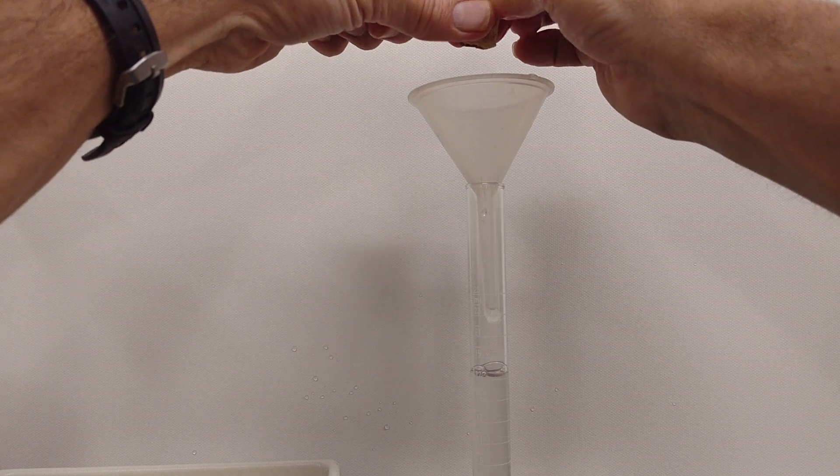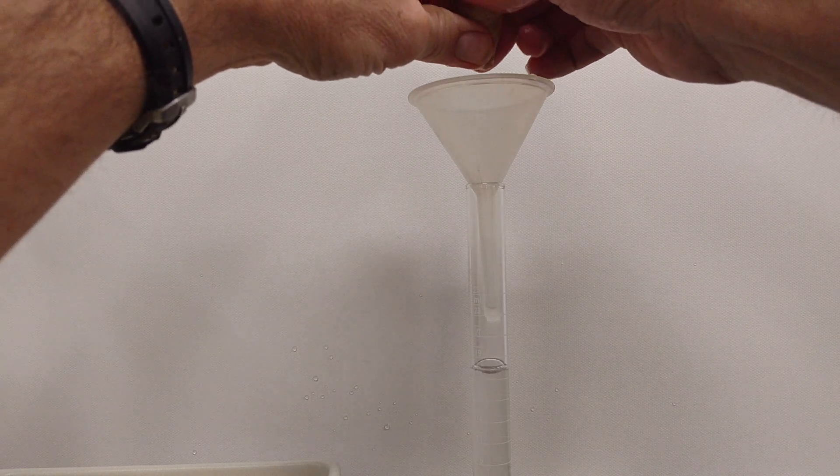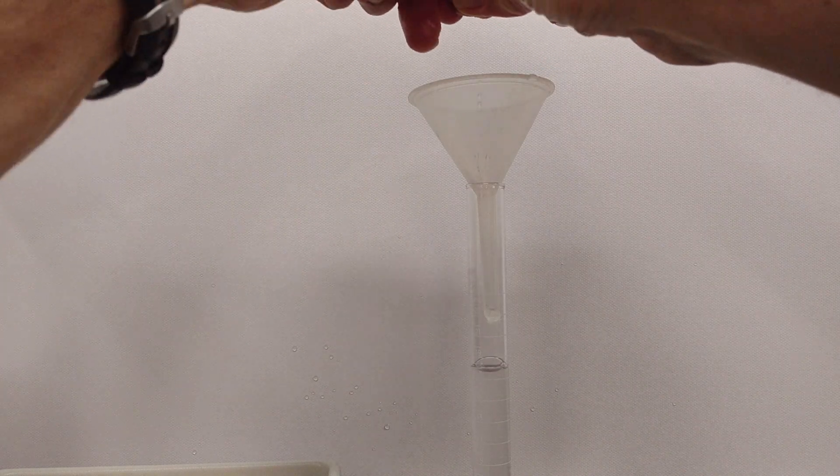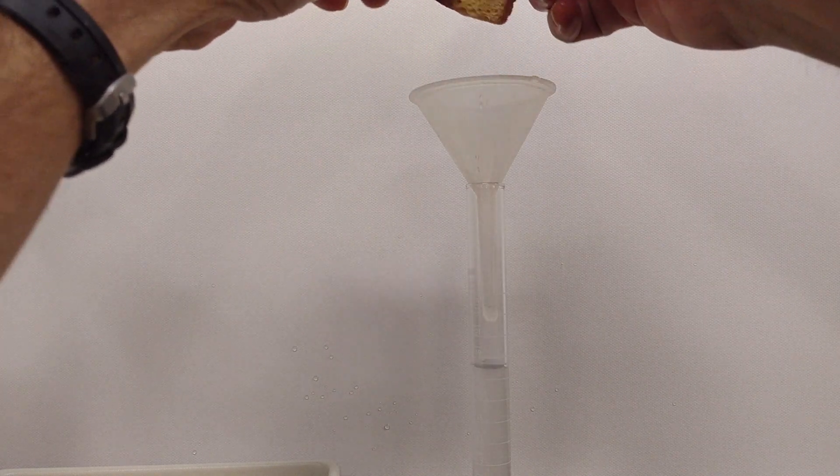At some point I've squeezed all the water out of the sponge that I can, and similarly at some point a plant removes all the water out of the soil that it can. We call that point the wilting point.